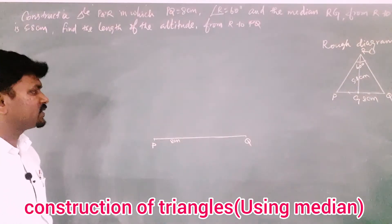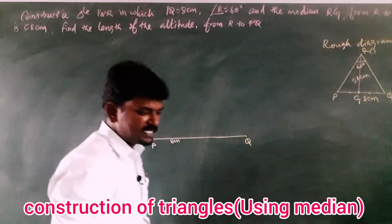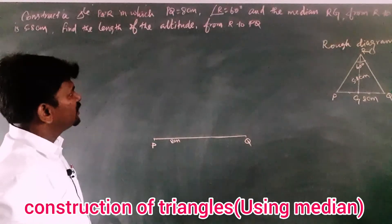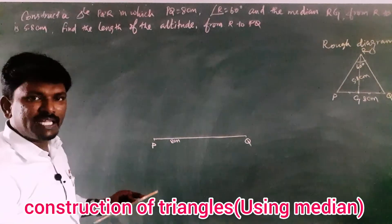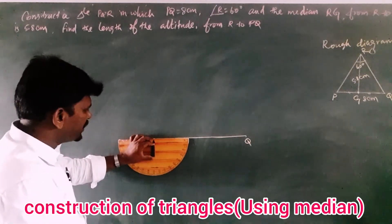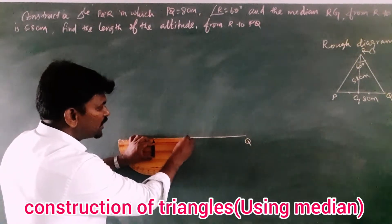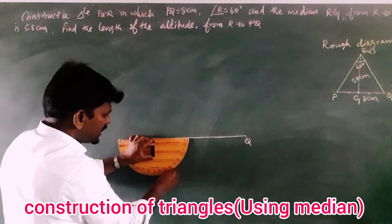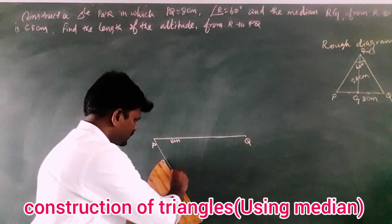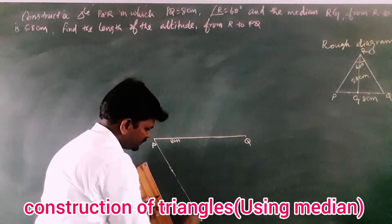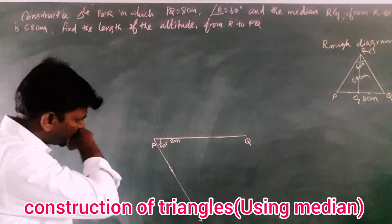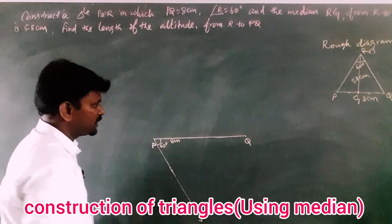Next, angle R is 60 degrees. Here P is on the left, Q is on the right, and R will be somewhere above. We do not know where R is yet. For that, keep the protractor and draw 60 degrees below the line segment PQ. Start from 0 and mark at 60 degrees — this gives angle QPX equal to 60 degrees. Draw ray PX at 60 degrees from PQ.